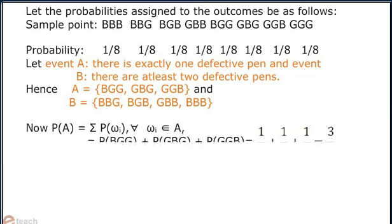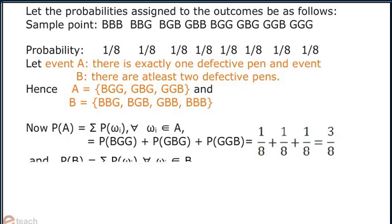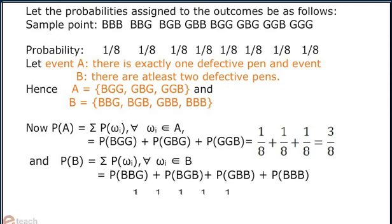Probability of A is equal to summation of probability of omega_i for all omega_i belonging to A. And probability of B is equal to summation of probability of omega_i for all omega_i belonging to B. It is equal to probability of BBG plus probability of BGB plus probability of GBB plus probability of BBB, which is equal to adding 1/8 four times, that comes out to be 1/2.